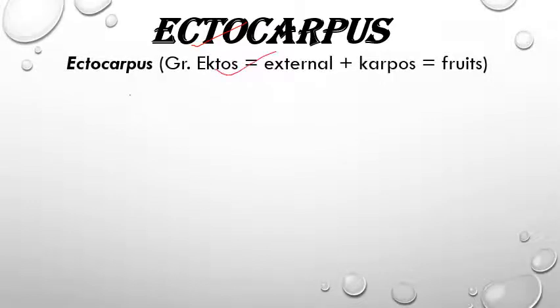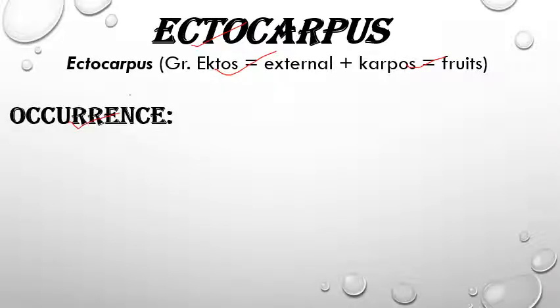Next we will discuss the etymology of Ectocarpus. Its name is derived from Greek words: 'ectos' means external and 'carpus' means fruit. So Ectocarpus refers to sporangia that are borne externally and look like fruits.